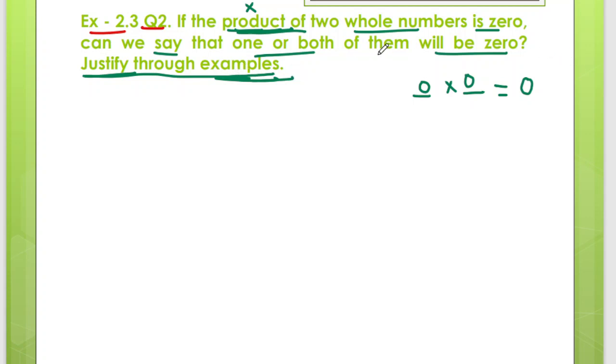If we think yes or no, we will say yes. Can we say that one or both of them? 0 into 0 is 0. This is right. So we can say that both of them will be 0. If one number is 2 and the other number is 0, is it equal to 0? Yes, it is equal to 0. So one of them will be 0, then also we will get the answer as 0, or both of them will be 0.